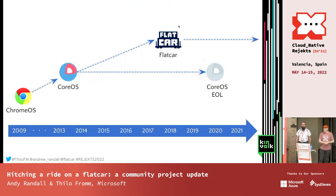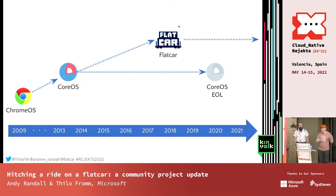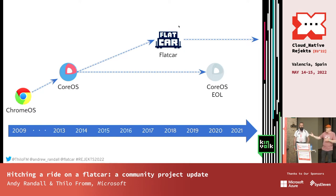There have been some pretty significant developments in terms of the project in that time. The first, and probably from many users' perspectives the most important one, was that the original CoreOS Container Linux reached end of life. This was something we'd been seeing was probably on the cards, and the reason why we introduced Flatcar was we wanted to enable a seamless migration path for users going forward who had deployed CoreOS. And so that took place.